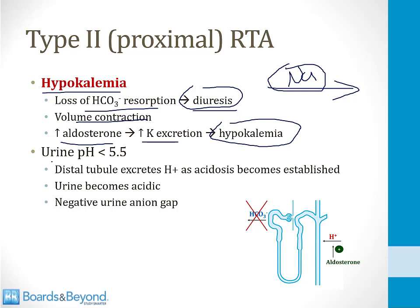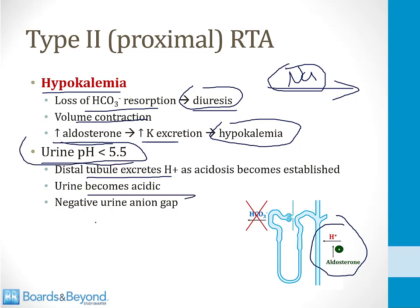The second important feature of a proximal RTA is that the urine pH will be low — less than 5.5 is a low pH. The distal tubule can still excrete protons in the setting of a type 2 RTA, and as more protons build up in the blood due to acidosis, the distal nephron starts putting lots of acid into the urine. This makes the urine acidic, making the urine pH low. It also causes a negative urine anion gap, which I'll talk more about in a few slides.